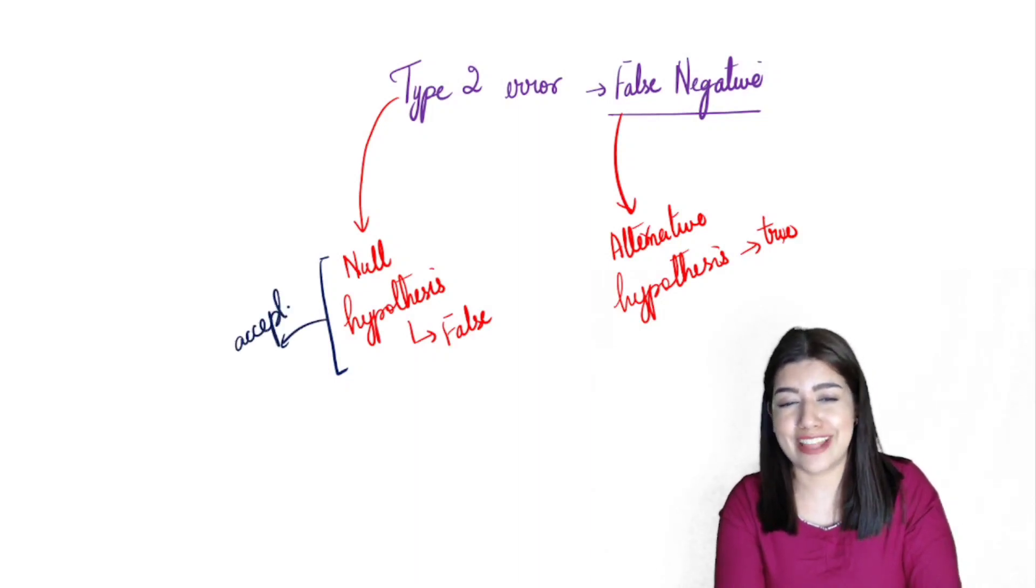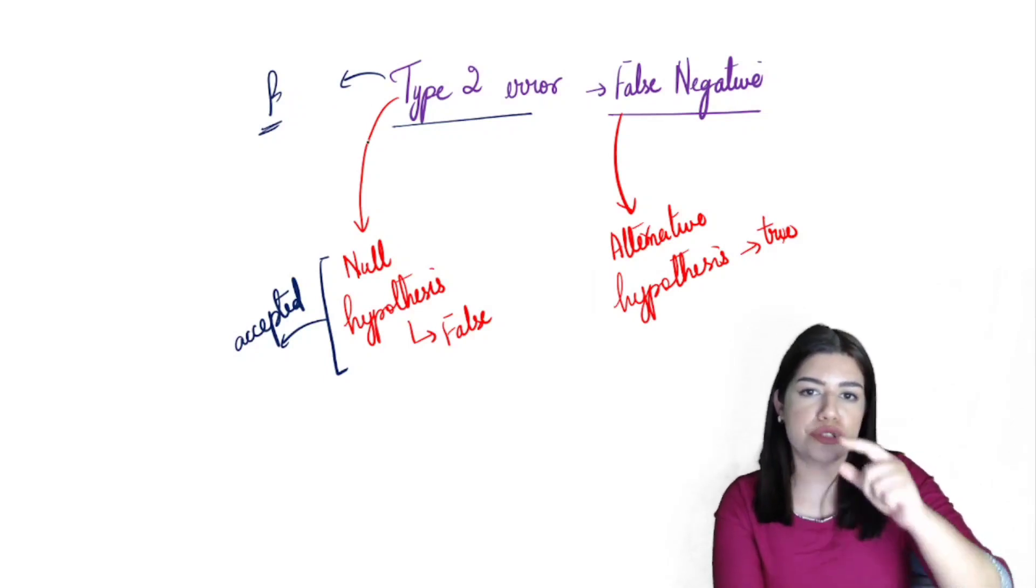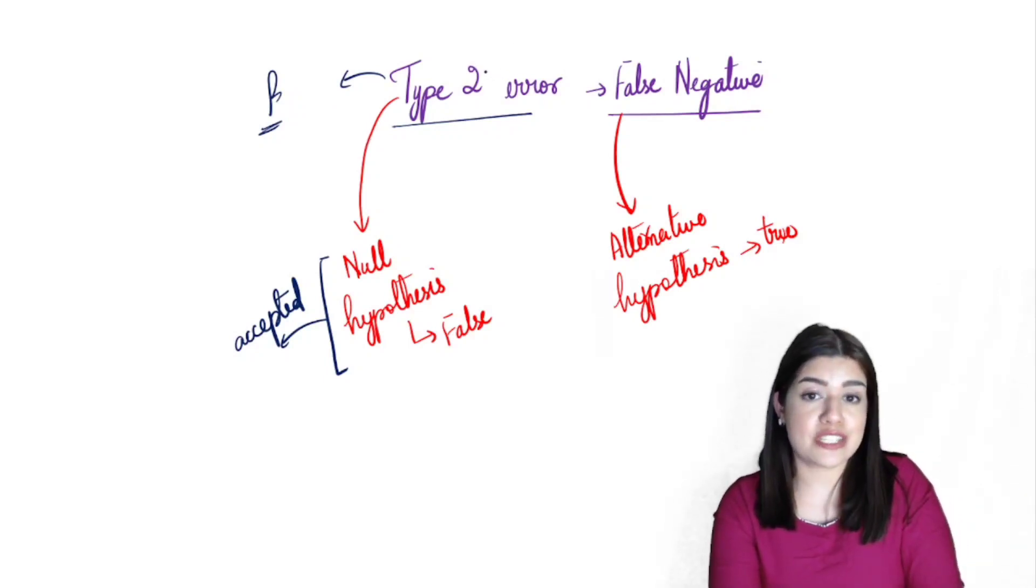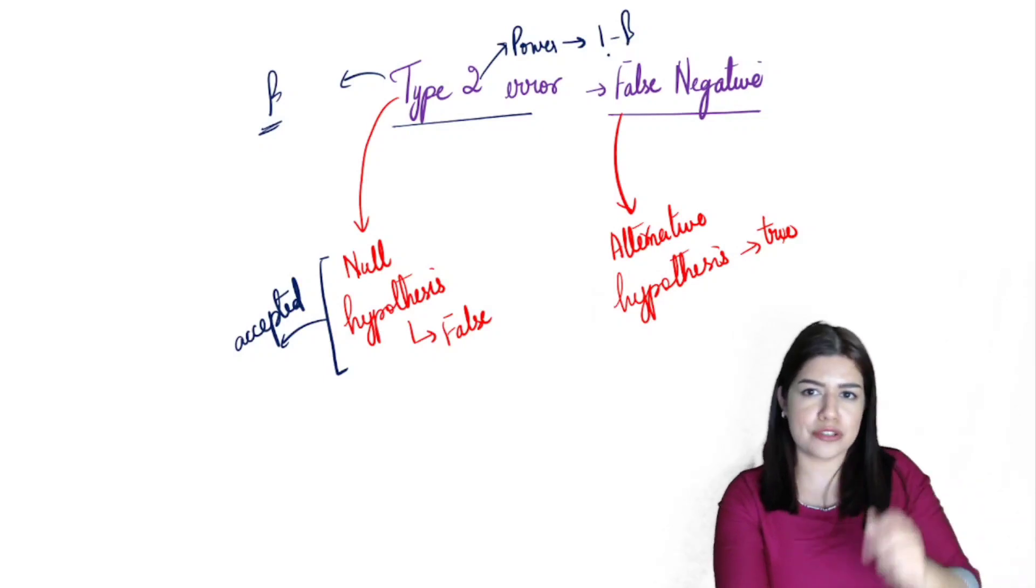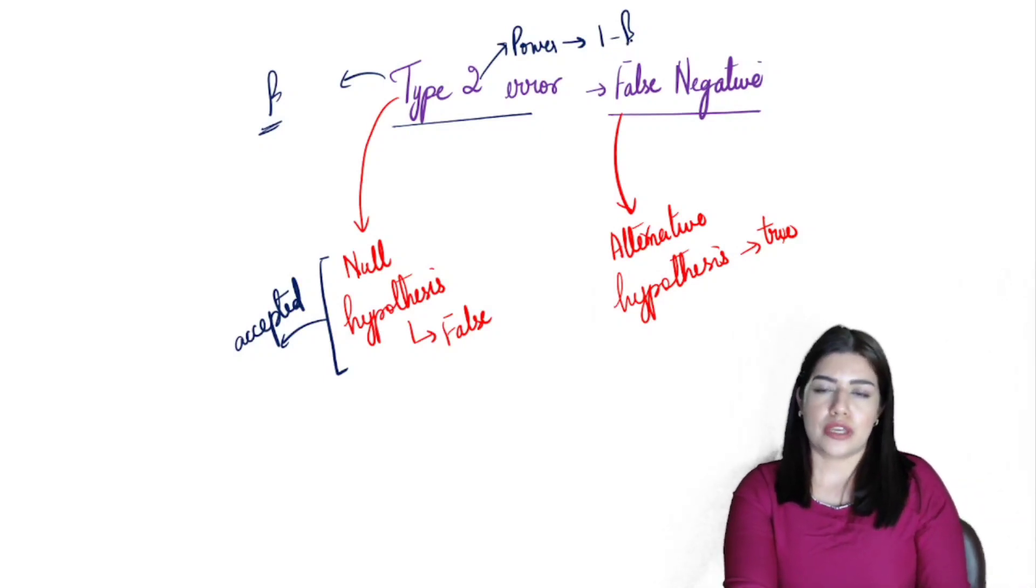This is the blunder that we are committing here. And the Type 2 error is also known as the beta error. A measure which is related to Type 2 error is test power. Test power can be measured as 1 minus beta, whereas significance is simply the same value as your alpha.